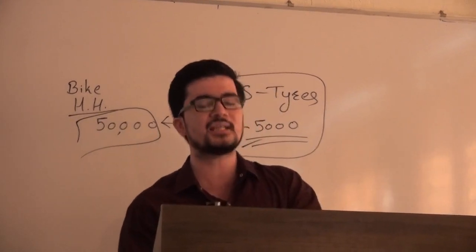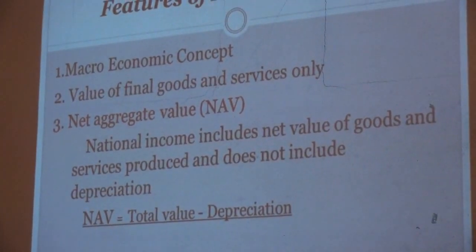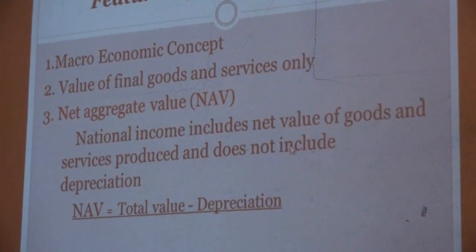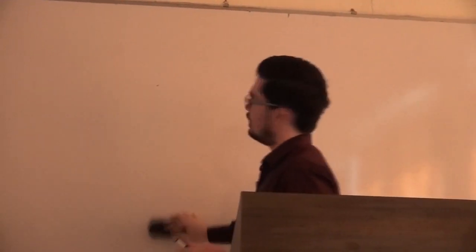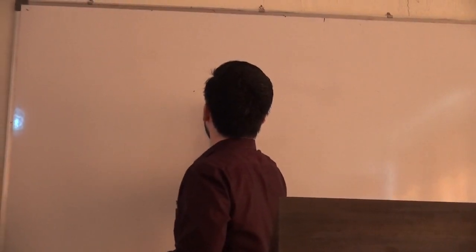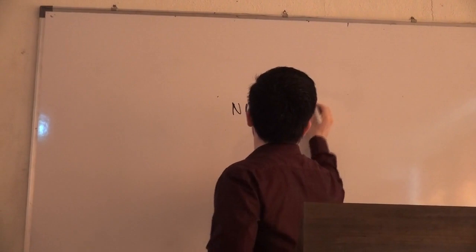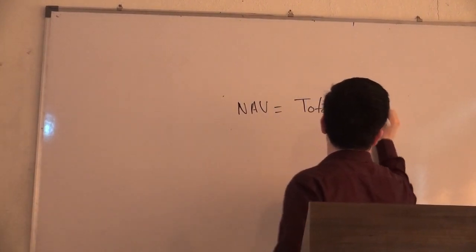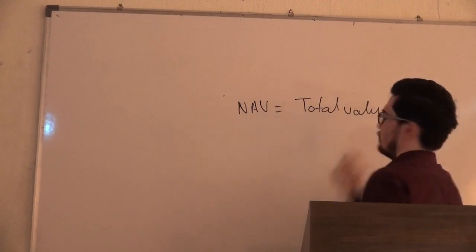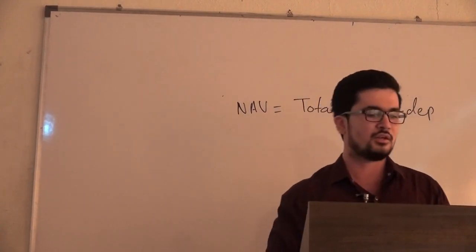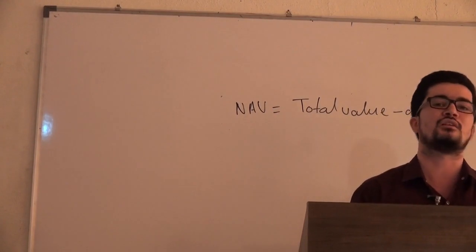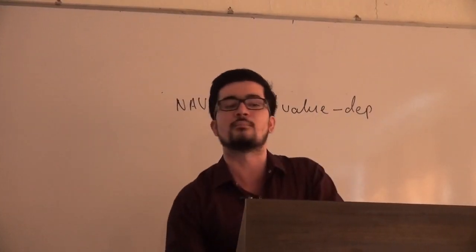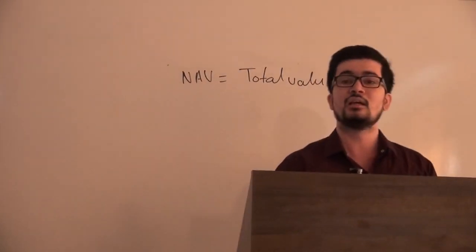The third feature is net aggregate value. Net aggregate value of goods and services produced does not include depreciation. We take the total value and reduce the depreciation. Why? Because goods already produced in a previous year have reduced value, which is removed from the national income. To get an accurate measure of national income, we take the net aggregate value.